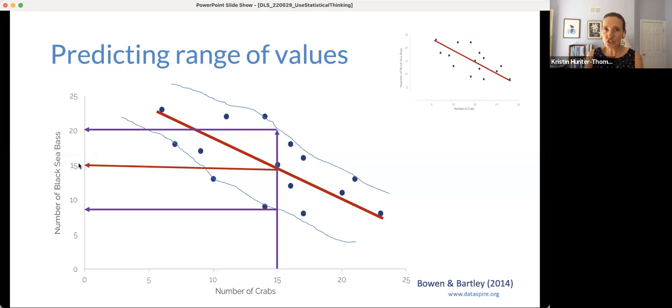you read up to the range and you read over. So then rather than saying 15, which is deterministic yes, no, and isn't actually an accurate representation of what our data indicate, you say okay, well, it seems like we have anywhere from like nine to 20 black sea bass we would anticipate if there are 15 crabs in the pot.